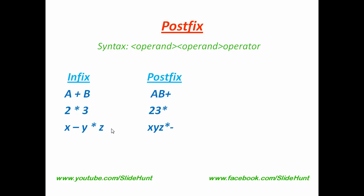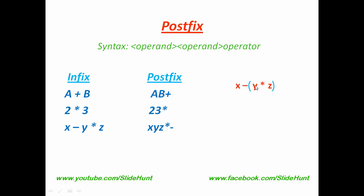x minus y star z in infix can be written as xyz star minus in postfix. According to the precedence rule, multiplication has higher precedence than subtraction, so we perform this operation first. Converting y star z into postfix gives us yz star. Now subtraction has two operands: x and this expression. After converting, we get xyz star minus. Remove the parentheses and this is the final result. Putting parentheses in the intermediate state is not mandatory, but parentheses increase human readability, so the choice is yours.